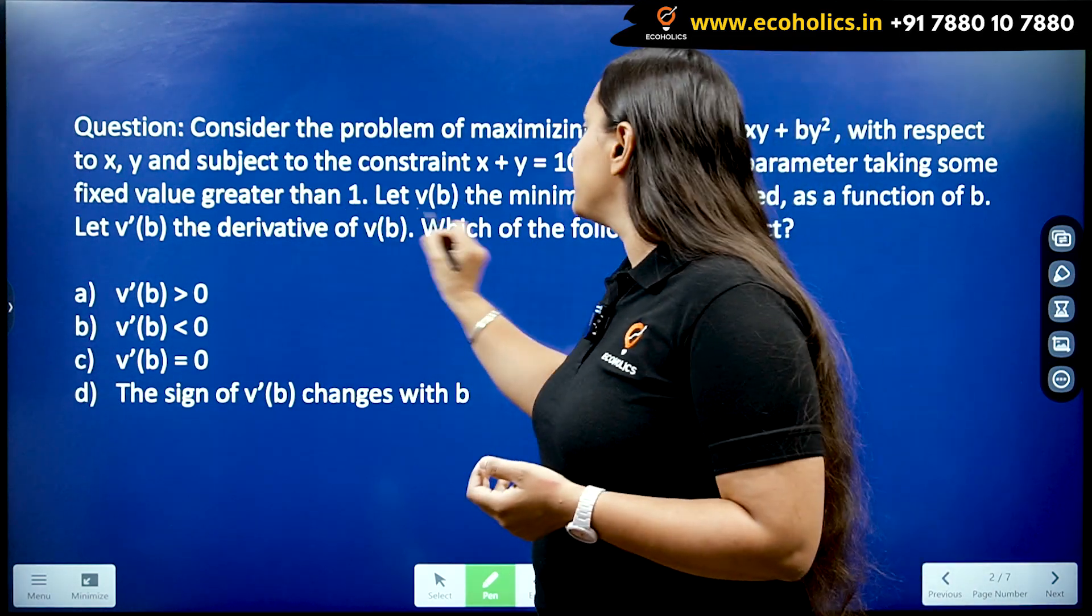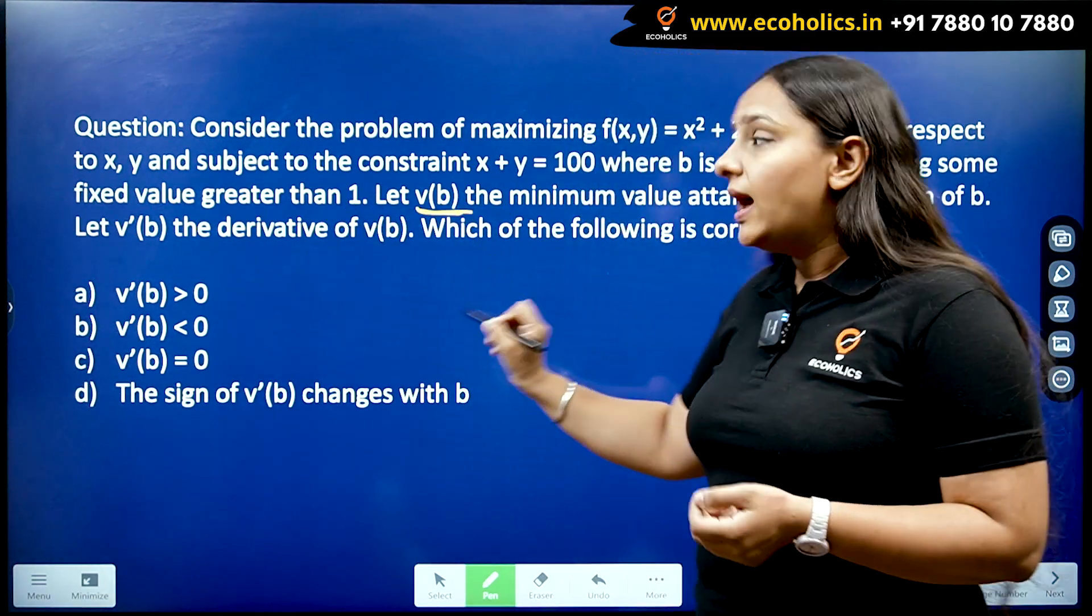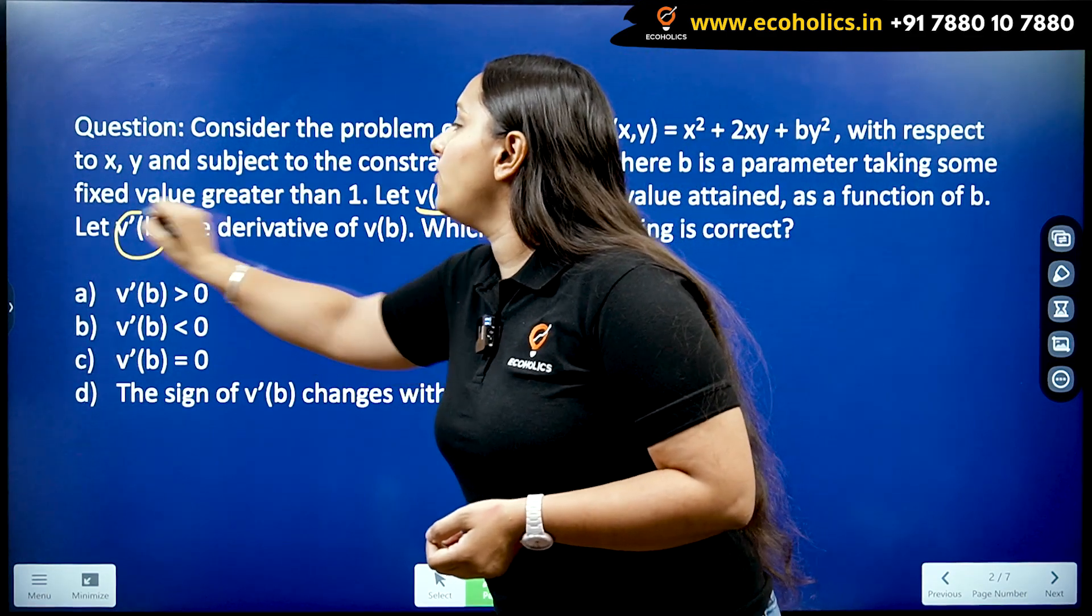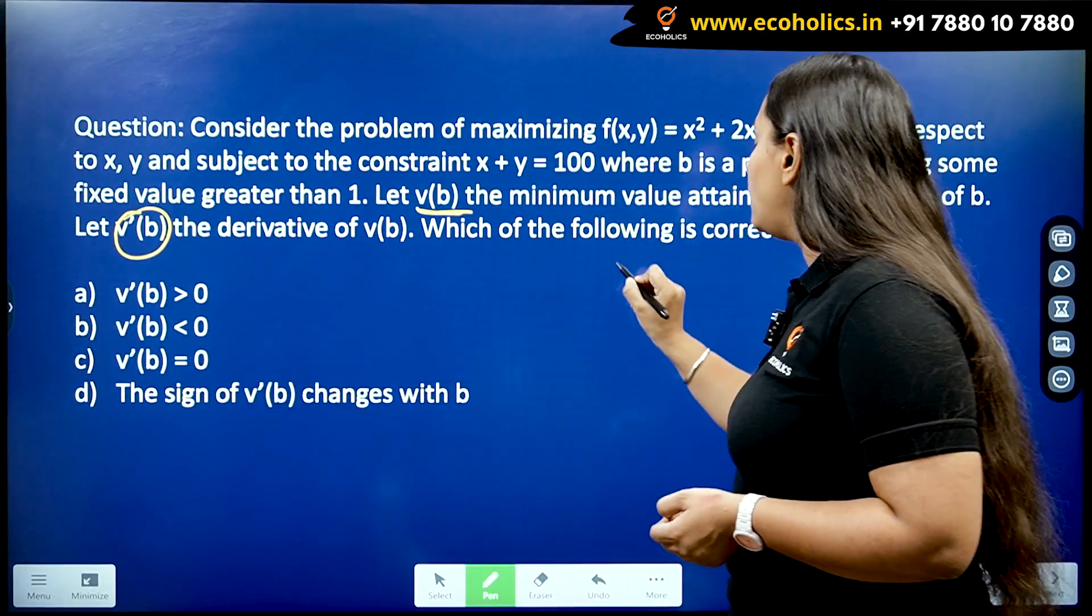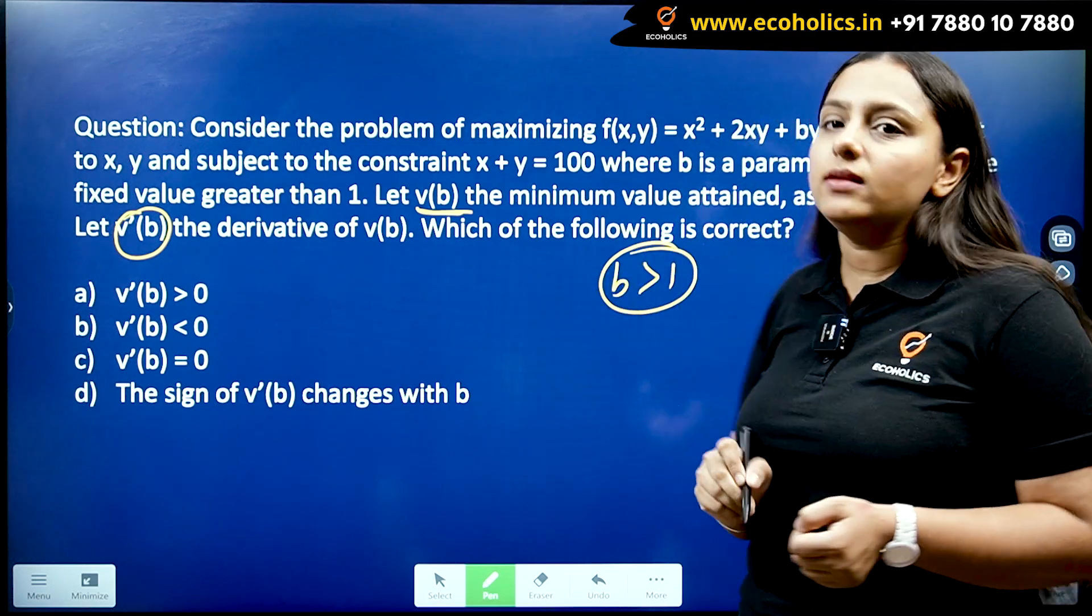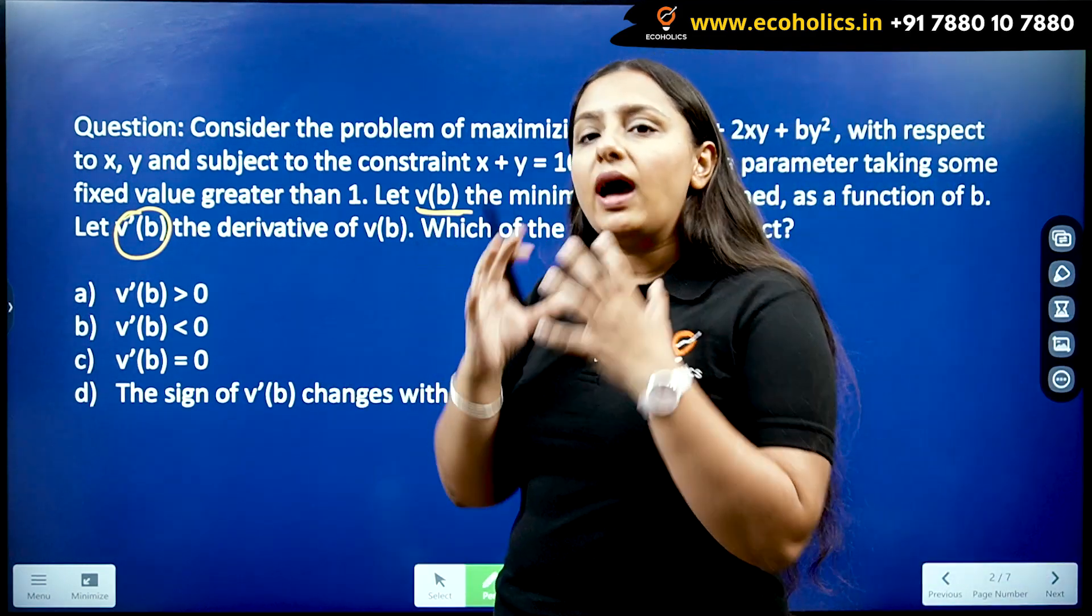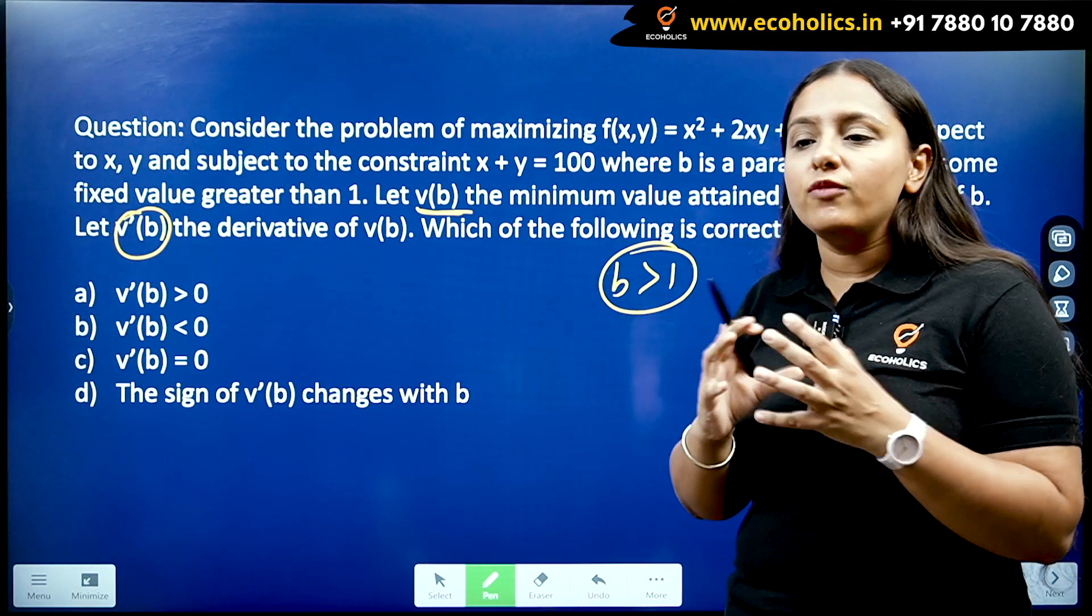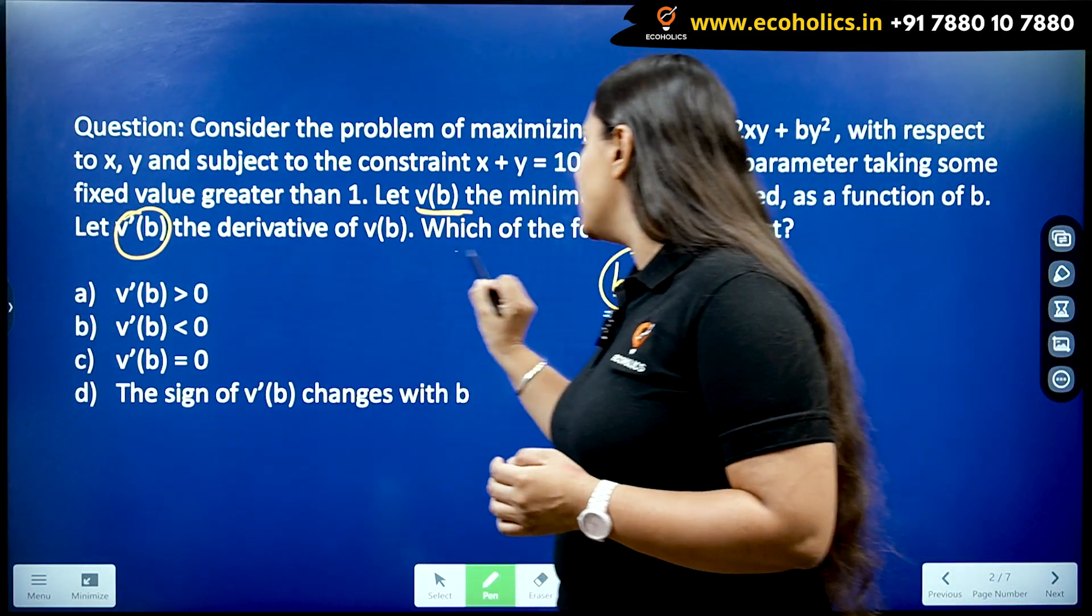Where they have told us that b will be a number which will always be greater than 1. So it means you have to work on some kind of values to derive a relationship.